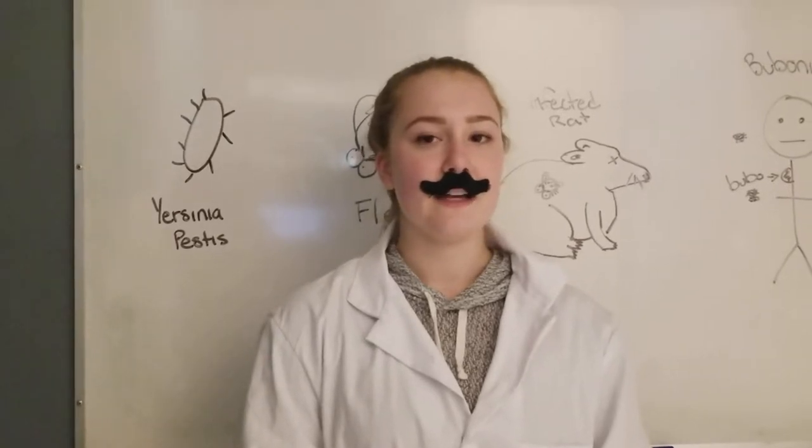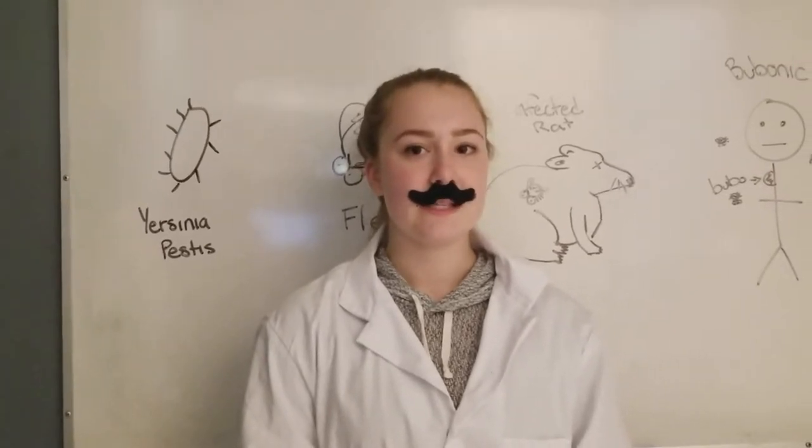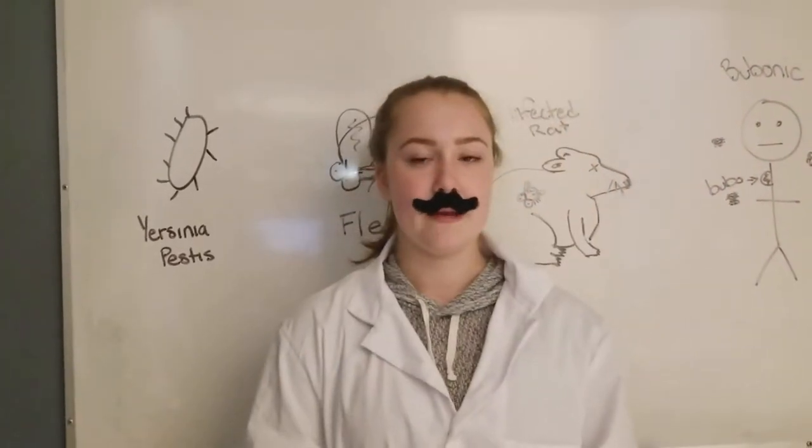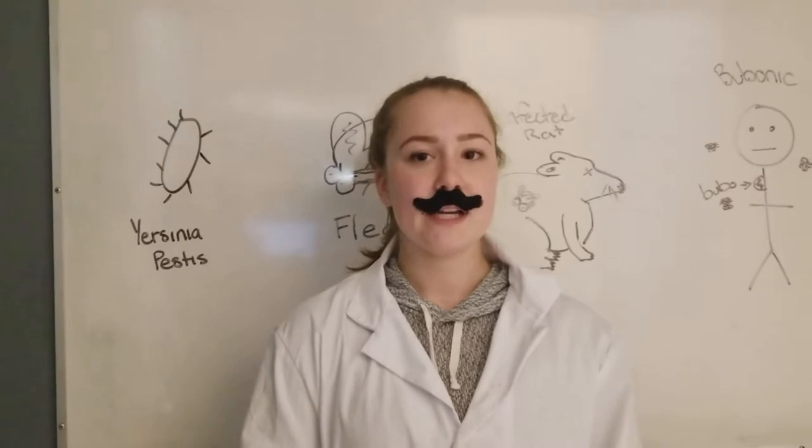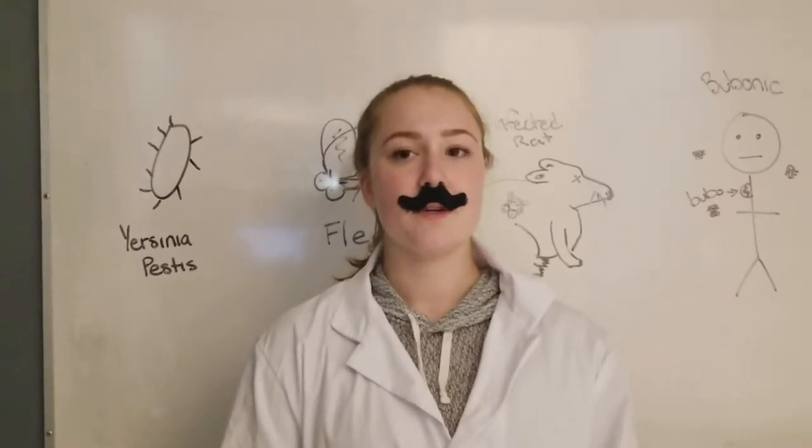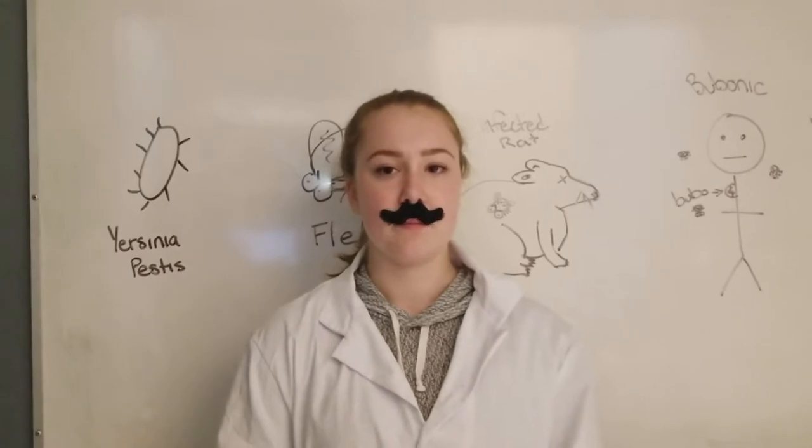The plague is a vector-borne disease and Yersinia pestis gets around by the gut of an infected flea. Humans get infected when bitten by a vector flea, unprotected contact with infectious bodily fluids, or inhalation of respiratory droplets from patients with pneumonic plague.